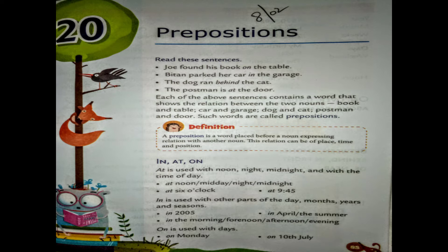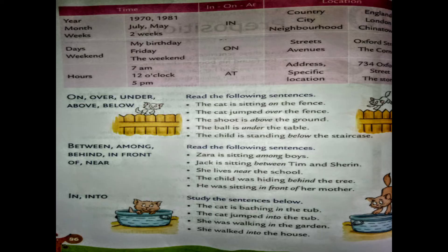For example, 'at' is used with time: at noon, midday, night, at six o'clock. When we talk about time, we use 'at'. When talking about a place, we also use 'at'. 'In' is used with other parts of the day, months, years, and seasons — for example, in 2005, in April, in summer, in the morning. 'On' is used with days: on Monday, on 10th July.